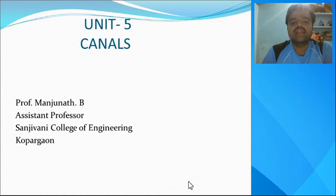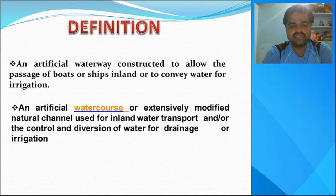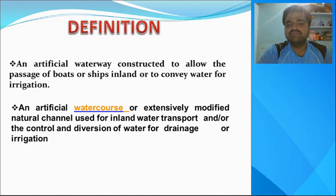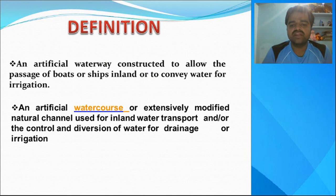Welcome to the lecture on the fifth unit: canals. Today I am going to cover the definition of canals and the classification of canals based on different factors. A canal is an artificial waterway constructed to allow the passage of boats or ships inland, or to convey water for irrigation purposes. It is also an artificial watercourse or extensively modified natural channel used for inland water transport or to control the diversion of water for drainage or irrigation.